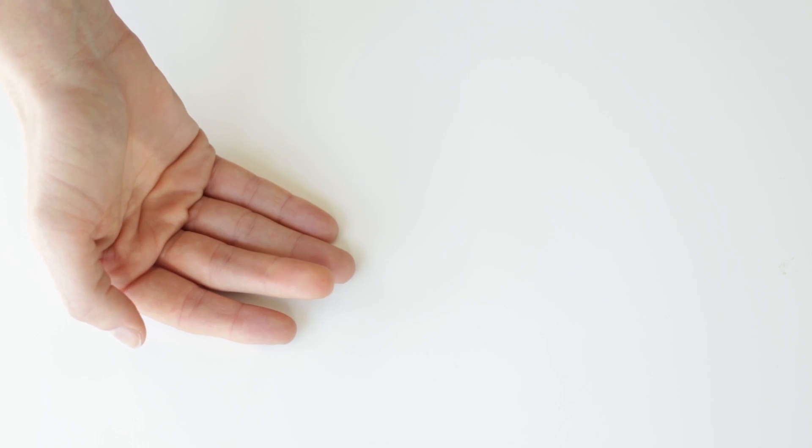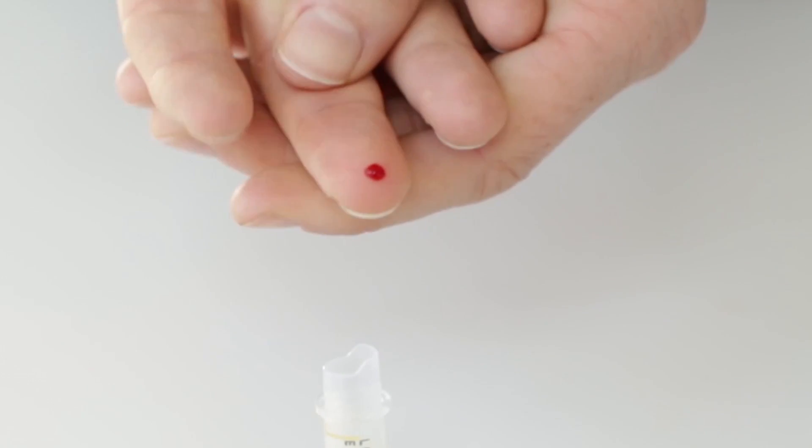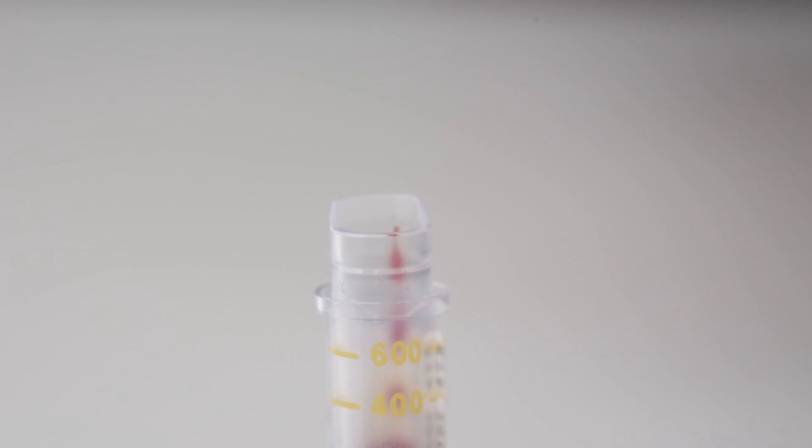Wipe away the first drop of blood with a clean tissue. Gently massage your finger from the knuckle to the tip and allow the drops of blood to fall into the tube.